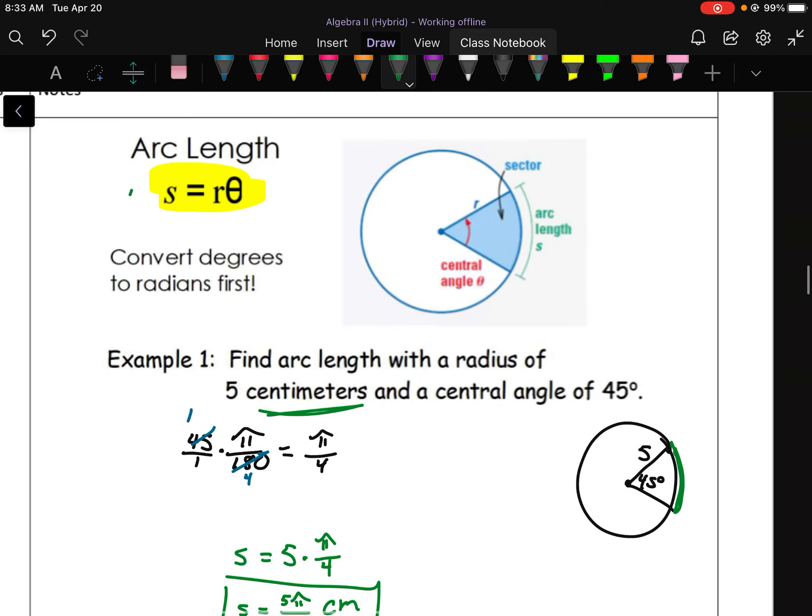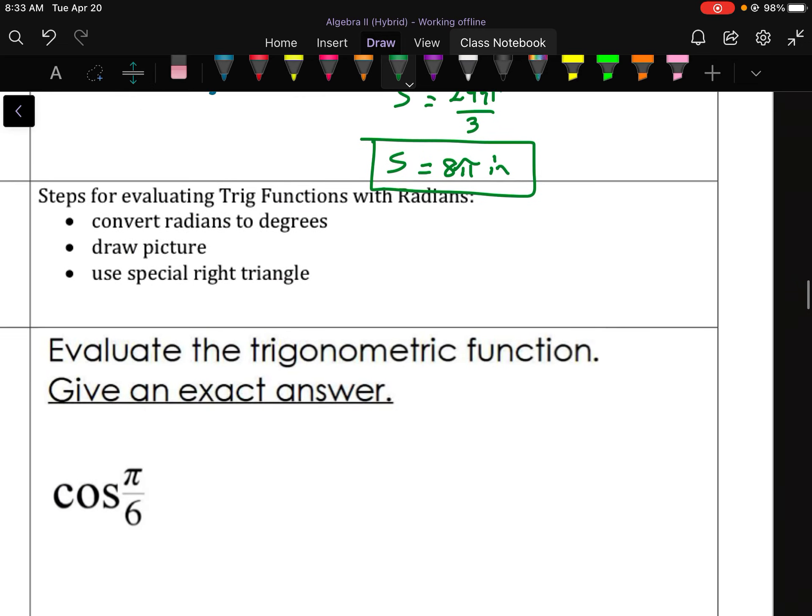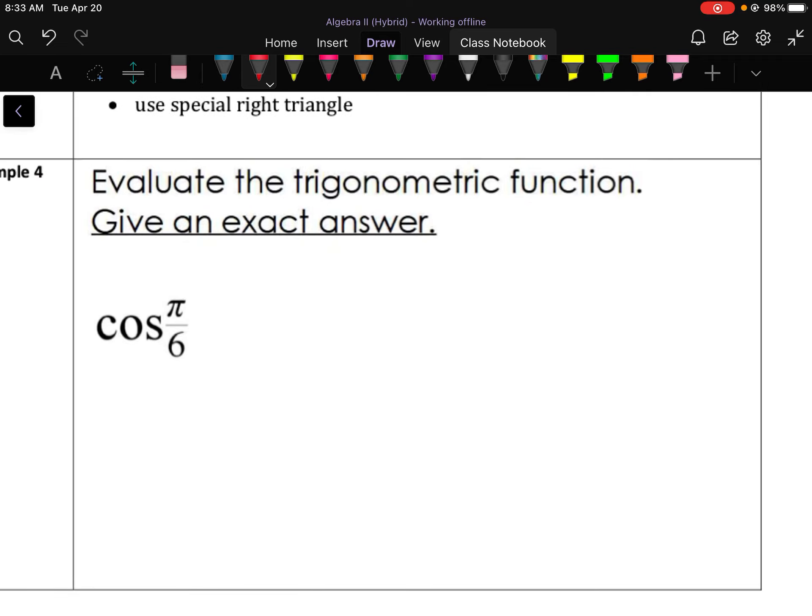Okay, so that's the first part, arc length. You just need to know your degrees and radians and then multiply it times your radius length. The second part here is evaluating trig functions with radians. So here are the steps if you want them. But the first thing is going to be to convert the radians to degrees now. And then we're going to draw a quick picture. And then if you can, we're going to use special right triangles. Sometimes that's not going to be an option. But here's your key to when you probably will have to use special right triangles. It says give an exact answer. That means no decimals. So that means either it's going to be really nice numbers, or it's going to be special right triangles. And in most cases, it'll be option B.